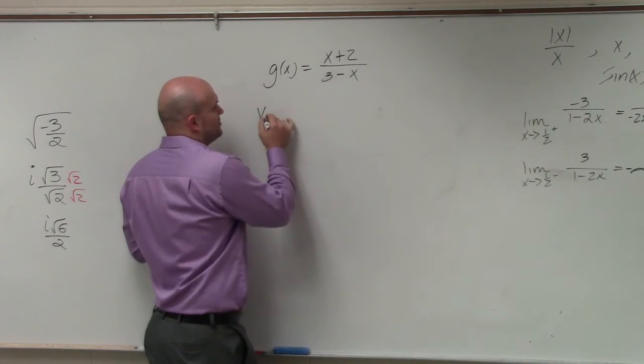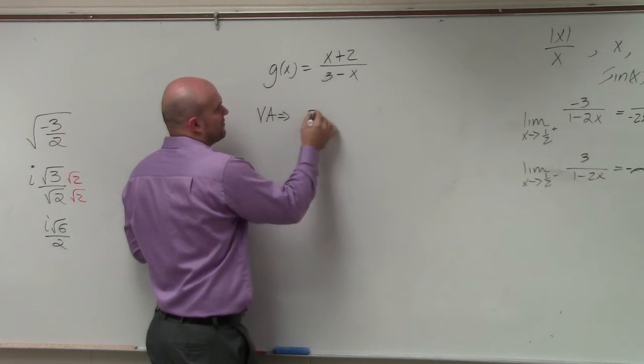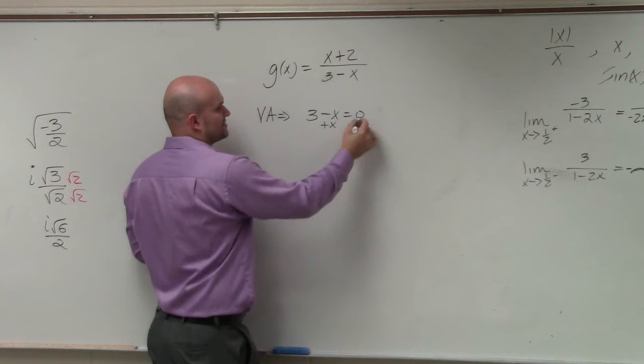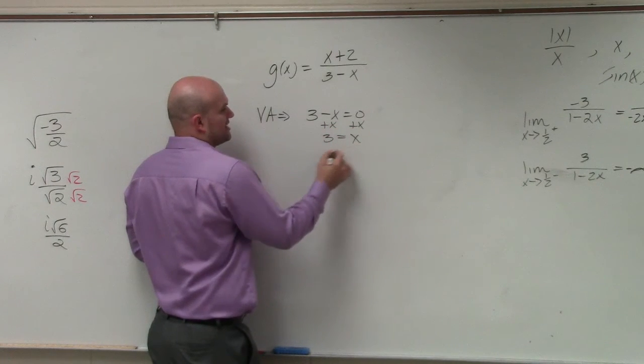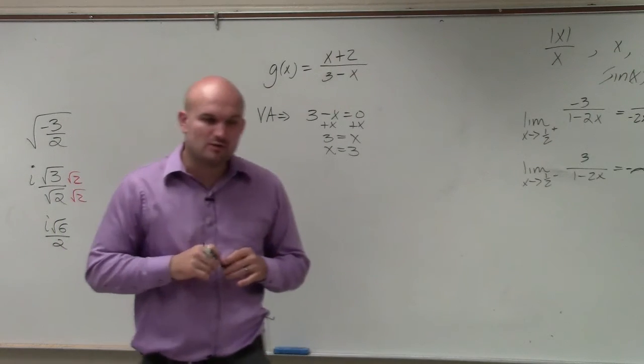So therefore, I'm just going to set my vertical asymptote equal to zero. So I'll just have three minus x equal to zero, and I'll just add an x over here. So I could say three equals x or x equals three. So my vertical asymptote is at the value of x equals three.